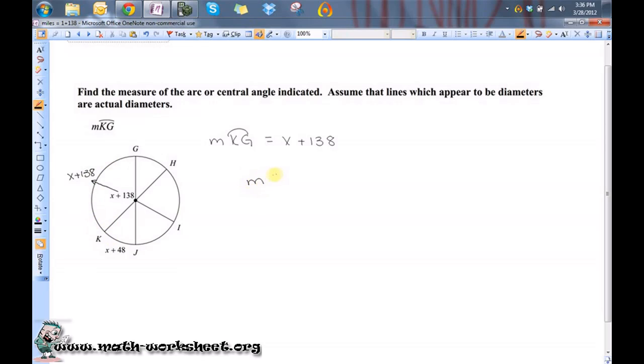So the measure of KG plus the measure of KJ equals 180 degrees. Well, let's substitute in the expressions that represent each of these things.